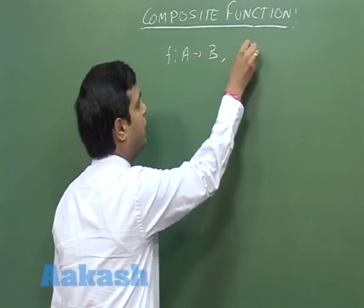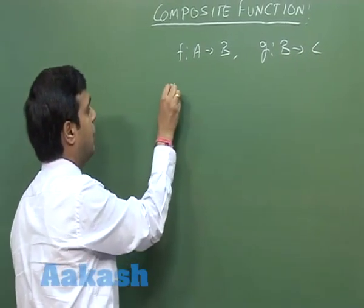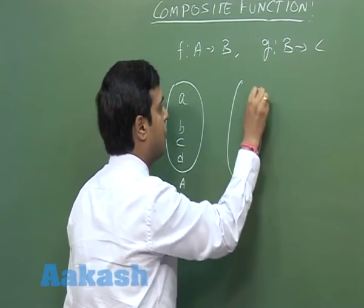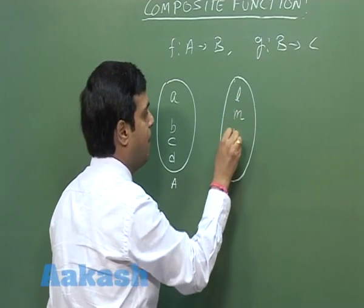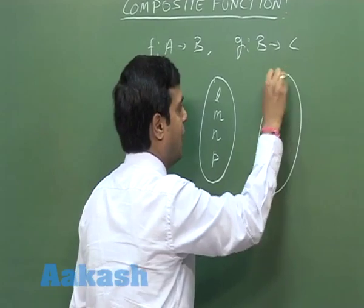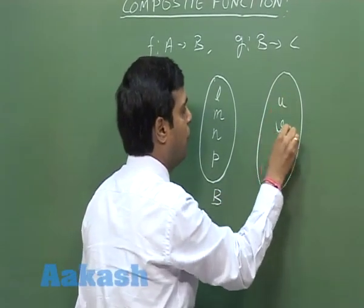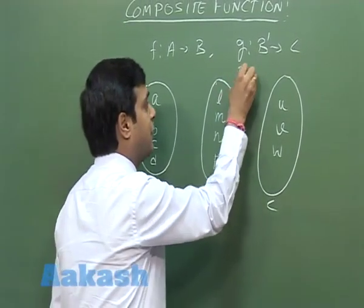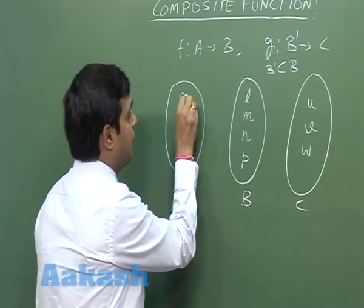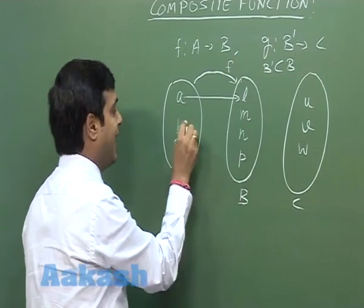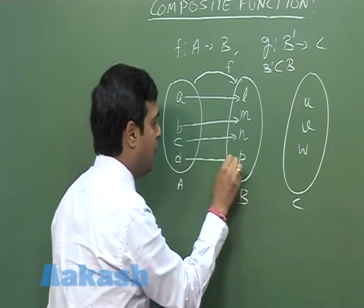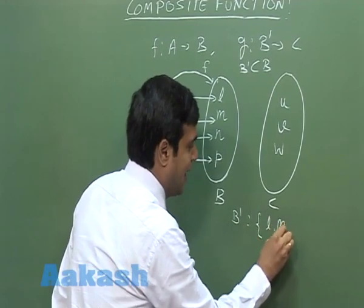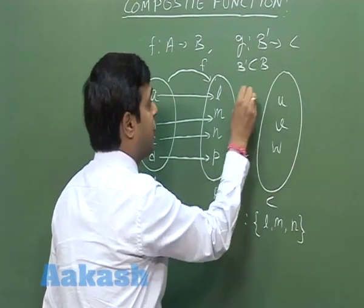Again I define f from A to B and g from B to C. But this time let's say set A is {a, b, c, d}, set B is {l, m, n, p}, and set C is {u, v, w}. Let us redefine g from B-dash, which is a subset of B. I define f by: f(a) = l, f(b) = m, f(c) = n, f(d) = p. And B-dash is {l, m, n}.